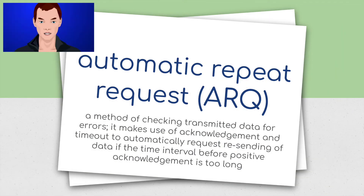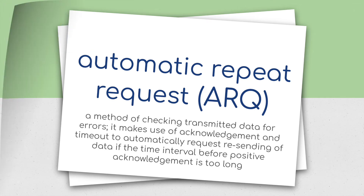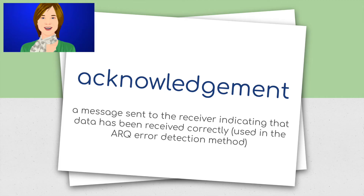Automatic repeat request (ARQ): a method of checking transmitted data for errors. It makes use of acknowledgement and time out to automatically request the resending of data if the time interval before positive acknowledgement is too long. Acknowledgement: a message sent to the receiver indicating that data has been received correctly, used in the ARQ error detection method.